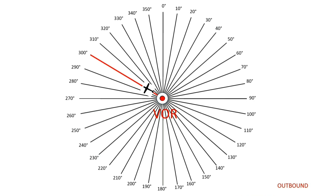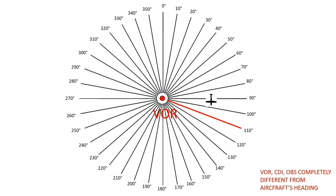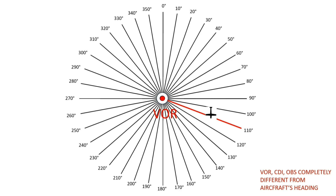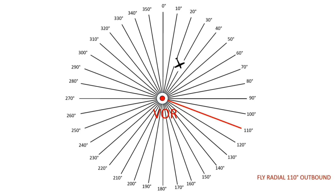There are two important concepts: outbound and inbound. If you are flying away from the station, it is called outbound. If you are flying towards the station, it is called inbound. Another important concept: VOR, CDI, and OBS are completely different from aircraft heading. For example, you may be crossing radial 110 but heading towards 180 — the VOR radial and your aircraft heading are completely different. To track a particular radial, you first fly to that radial and then track it. If ATC tells you to fly radial 310 inbound, you fly to that radial and then track it inbound.